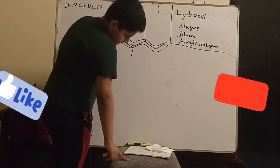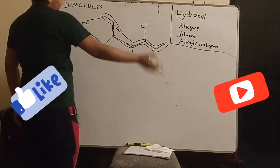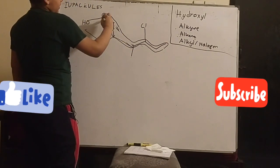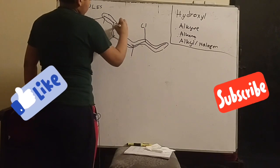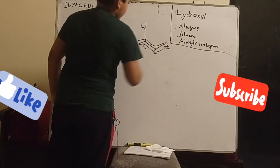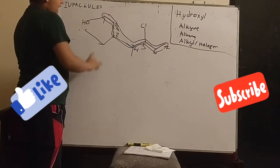Now we have to name it from right to left because this is the substituent that occurs soonest. So 1, 2, 3, 4, 5, 6, 7 - it is a heptene molecule.